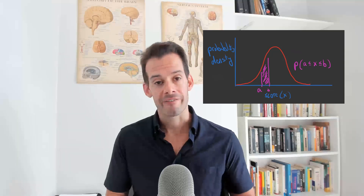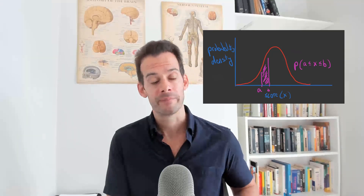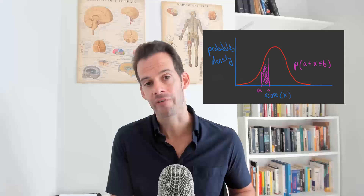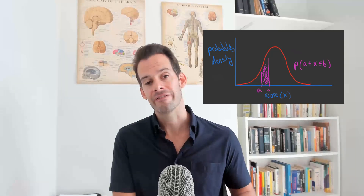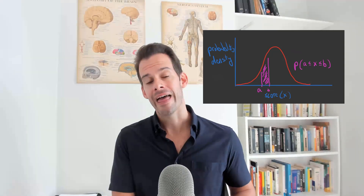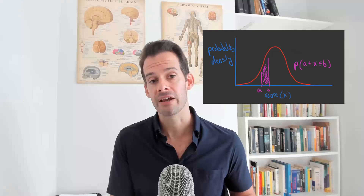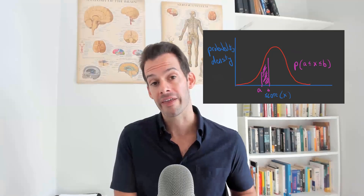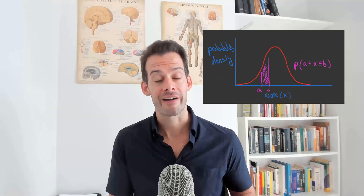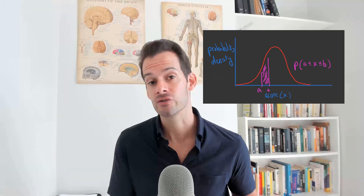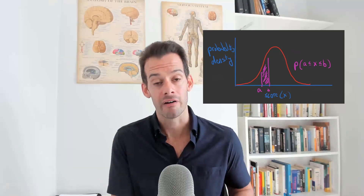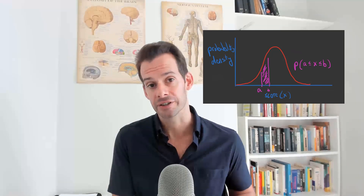So if I look at an area under the curve between one point for X and another point for X and I find an area of 0.1, that means 10% of scores in the population fall within that range. And that means if I randomly select a score from the population, it would have a 10% chance of falling in that range.